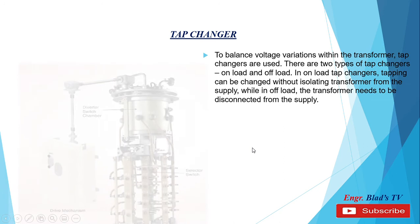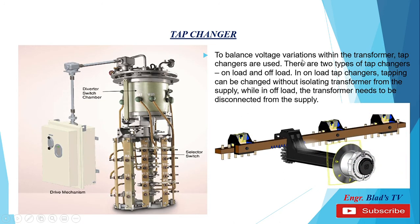Tap changer. To balance voltage violations within the transformer, tap changers are used. There are two types of tap changers: on-load and off-load. In on-load tap changers, tapping can be changed without isolating the transformer from the supply. While in off-load, the transformer needs to be disconnected from the supply. In this picture we can see a sample of an on-load tap changer, while in this picture we can see a sample of a de-energized or off-load tap changer.